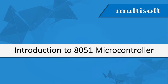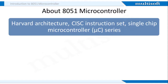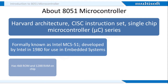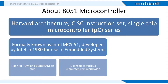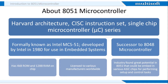Let's get started and understand what an 8051 microcontroller is. 8051 is a Harvard Architecture CISC instruction set single-chip microcontroller series. It was developed by Intel in 1980 for use in embedded systems and is formerly known as Intel MCS-51. The 8051 microcontroller has a 4KB ROM and 128-byte RAM on chip, and has been licensed to various manufacturers worldwide. As the successor to the 8048 microcontroller, the industry found great potential in 8051 that could be embedded in various ASIC chips for performing setup and control tasks.